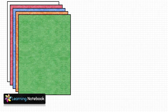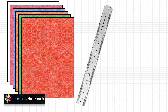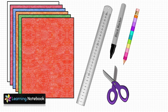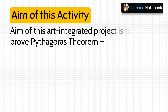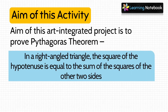For this activity we need a few colorful thick sheets, a ruler, a black marker pen, a pencil, and a pair of scissors. The aim of this art integrated project is to prove the Pythagoras theorem with the help of an interesting activity. The Pythagoras theorem states: in a right angle triangle, the square of the hypotenuse is equal to the sum of the squares of the other two sides.